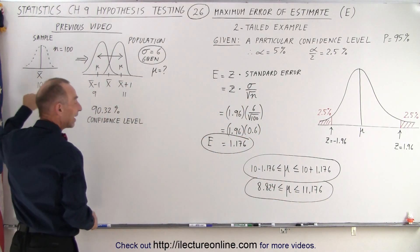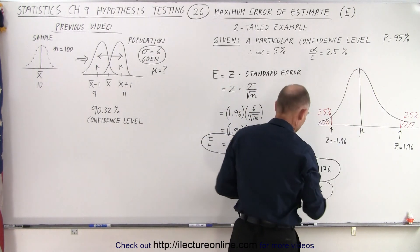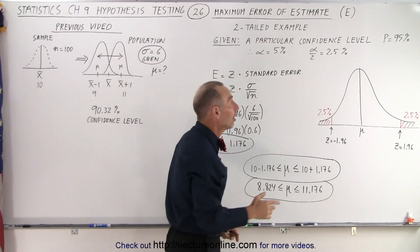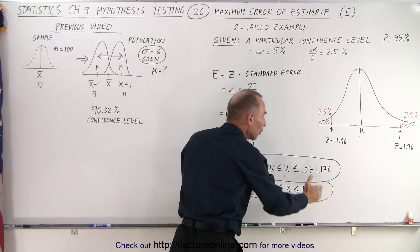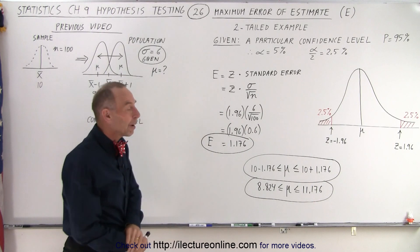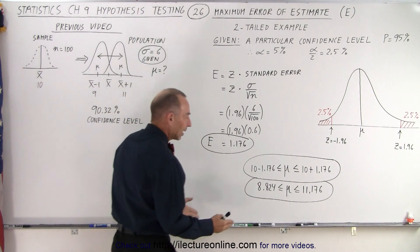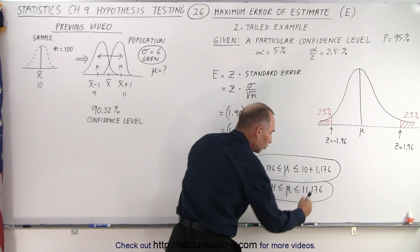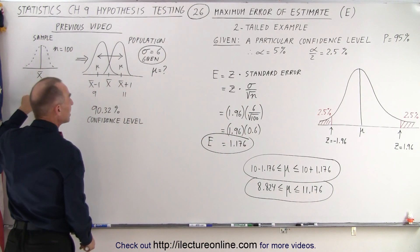In other words, we're 95% confident that the mean of the population falls somewhere between 8.824 and 11.176. If the sample mean is 10 and we want to know the range of values that the population mean can have up to 95% confidence level, this is the range of values.